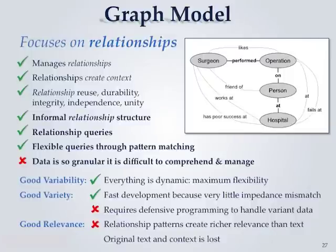The last model is the graph model, where managing relationships is the focus — it inverts everything in a relational database. In a relational database, data was the focus. In a graph database, you care about the types of relationships, and you actually define types of relationships. The data is not the point — if I were in a graph database, I would just be some ID. What identifies me are all the relationships of everything about me.